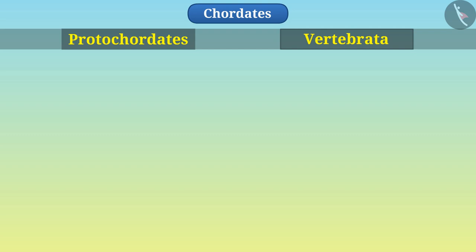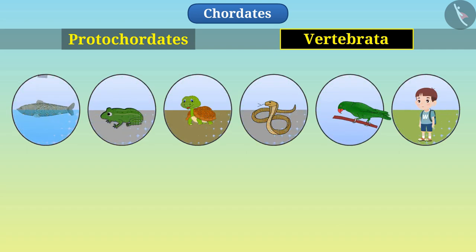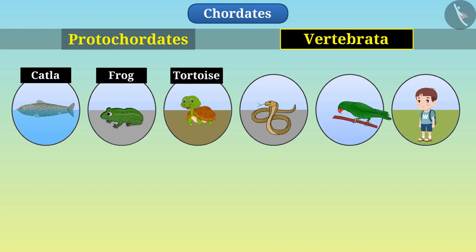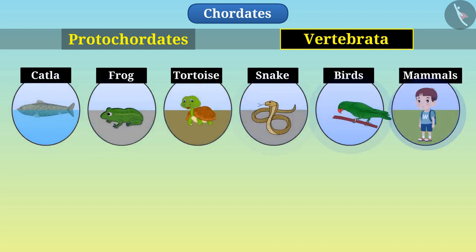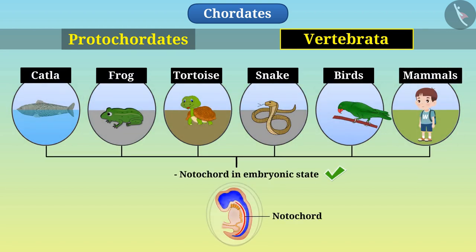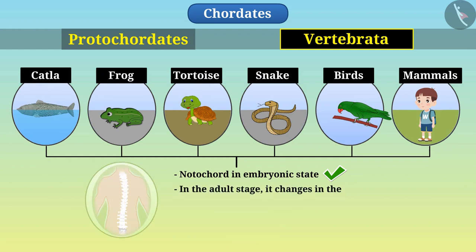Now let's talk about vertebrata. These include various animals like cattle, frog, tortoise, snake, various birds and mammals. In the embryonic stage of vertebrata group animals, notochord is found. In the adult stage, it changes into the cartilaginous or bony vertebral column.